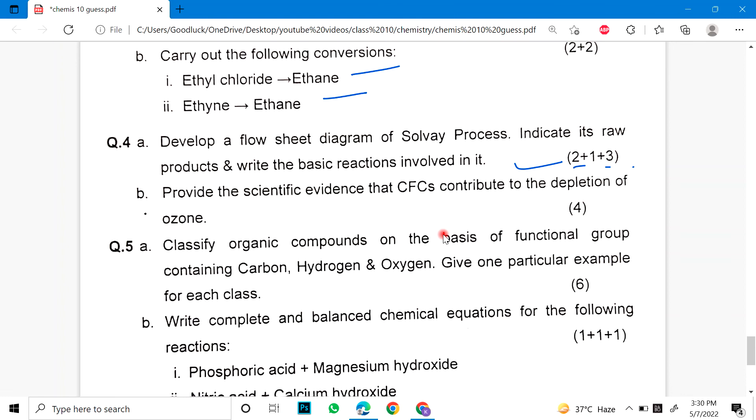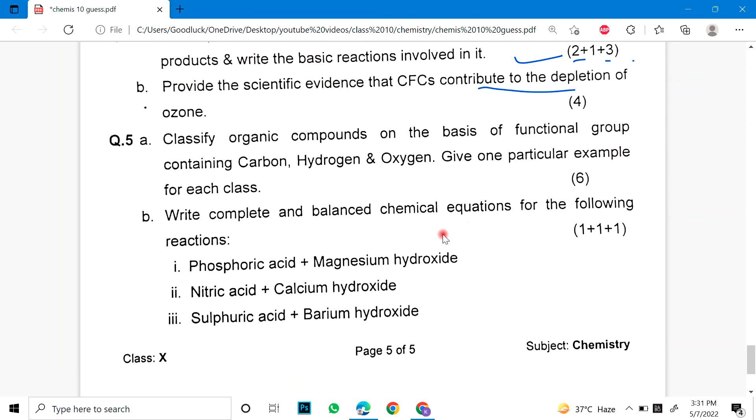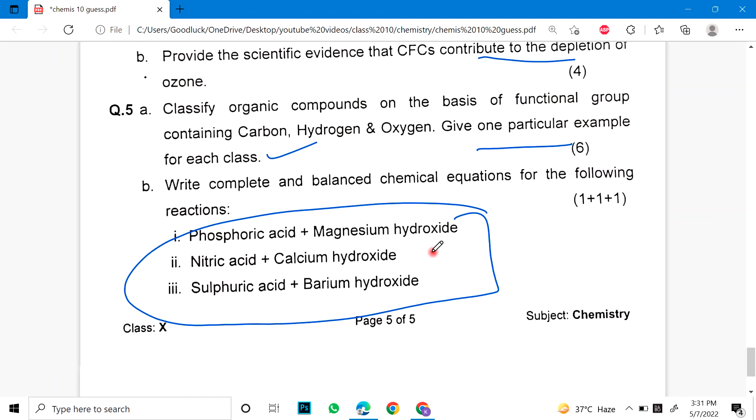Part B. Provide the scientific evidence that chlorofluorocarbons contribute to the depletion of ozone. 5. Classify organic compound on the basis of functional group containing carbon, hydrogen and oxygen. Give one particular example for each class. B is right, complete and balanced chemical equation for the following reactions. These three reactions are in your balance chemical equations.